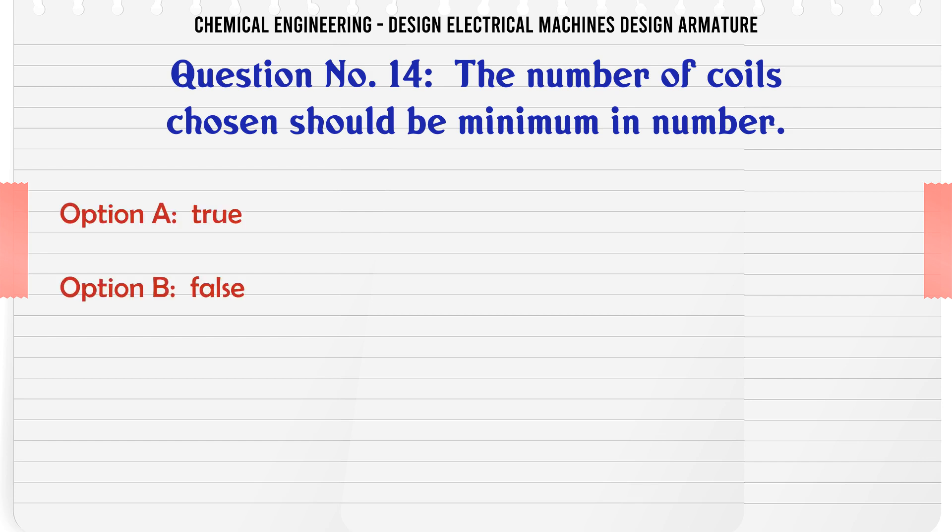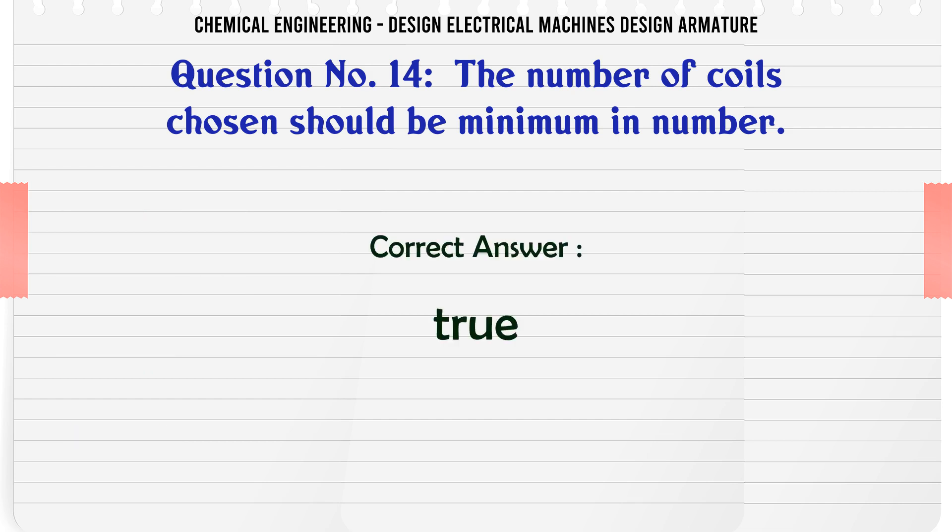The number of coils chosen should be minimum in number. Options: A) True, B) False. The correct answer is True.